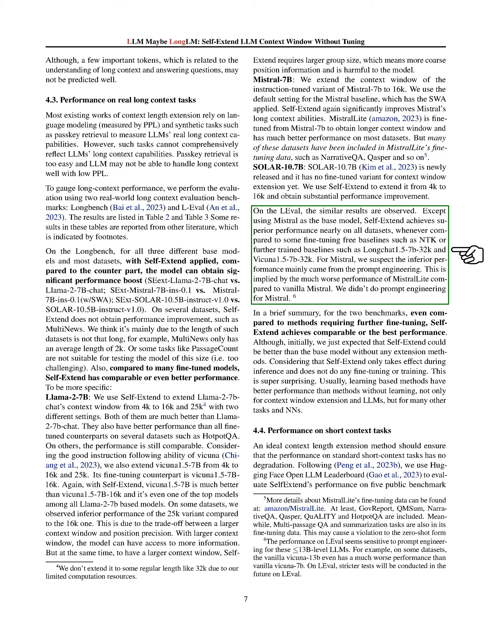Typically, methods that involve learning perform better than those that don't, not just for extending the context window of language models, but for many other tasks and neural networks as well. Existing methods for extending the context length of LLMs often rely on language modeling and synthetic tasks, which may not comprehensively reflect their long-context capabilities. Our results on LongBench and L-Eval show that Self-Extend significantly improves the performance of LLMs on these benchmarks, outperforming fine-tuned models and achieving comparable or even better performance — surprising given that Self-Extend only affects inference and does not involve any fine-tuning or training.